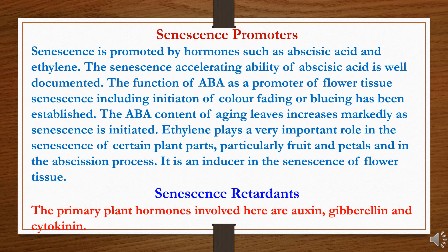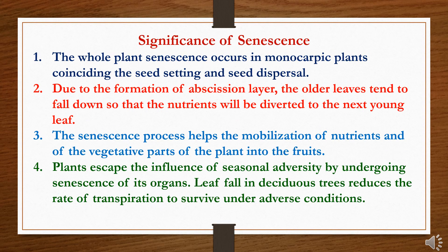The primary plant hormones involved as senescence retardants are auxins, gibberellins, and cytokinins. Regarding the significance of senescence: first, whole plant senescence occurs in monocarpic plants, concerning seed setting and seed dispersal. Second, due to the formation of the abscission layer, older leaves tend to fall so that nutrients will be devoted to the next young leaf. Third, the senescence process helps the mobilization of nutrients from the vegetative parts of the plants into the fruits. Fourth, plants escape the influence of seasonal adversity by undergoing senescence of their organs — leaf fall in deciduous trees reduces the rate of transpiration to survive under adverse conditions.